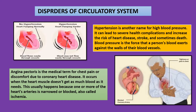Disorders of the circulatory system. The first one is hypertension. Hypertension is another name for high blood pressure. It can lead to severe health complications and increase the risk of heart disease, stroke, and sometimes death. Blood pressure is the force that a person's blood exerts against the walls of their blood vessels. In the first diagram, I have shown how hypertension affects the heart and circulation.